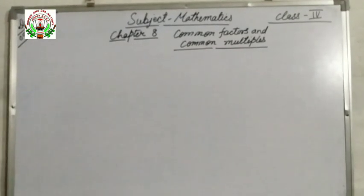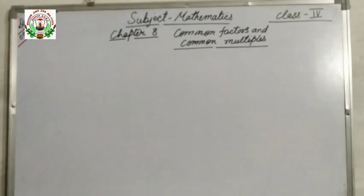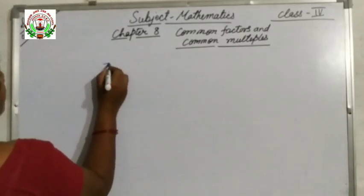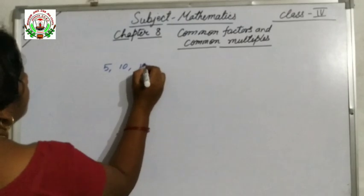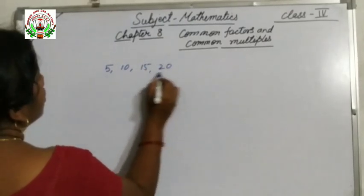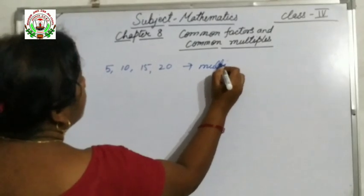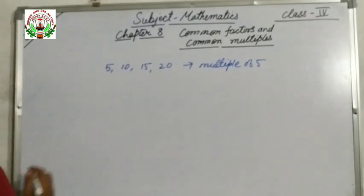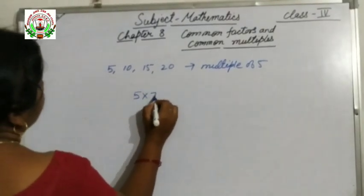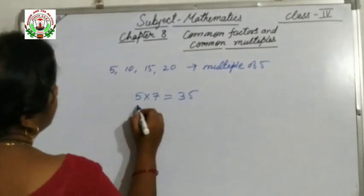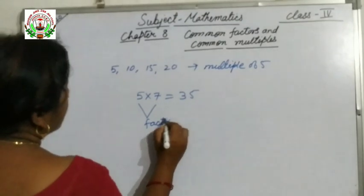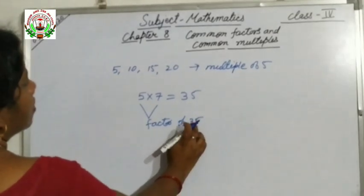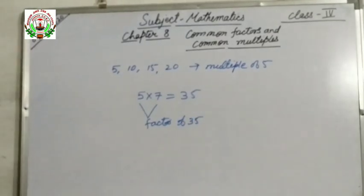We have already completed chapter 7. Multiples are the result when you multiply a number with another number. For example, 5, 10, 15, 20 — these are called the multiples of 5. Similarly, about factors: 5 and 7 are factors of 35, because 5 times 7 equals 35. So both 5 and 7 are factors of 35. So we have just recalled what is a multiple and what is a factor.